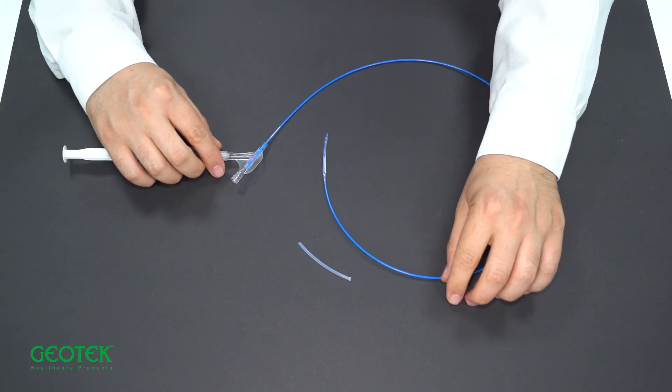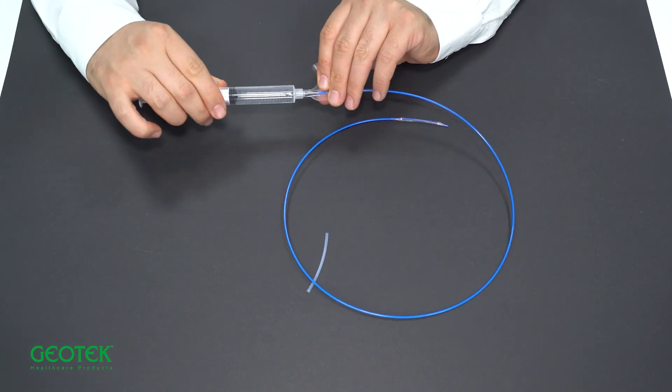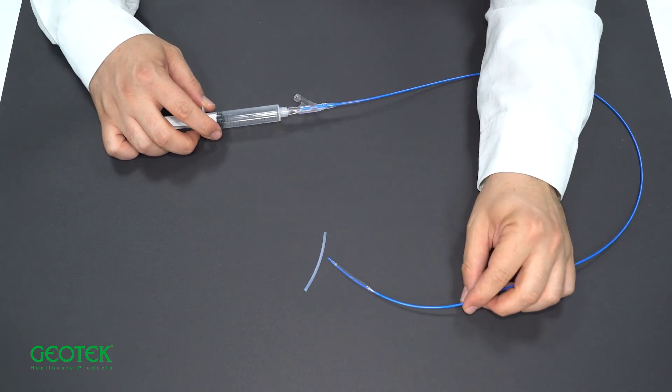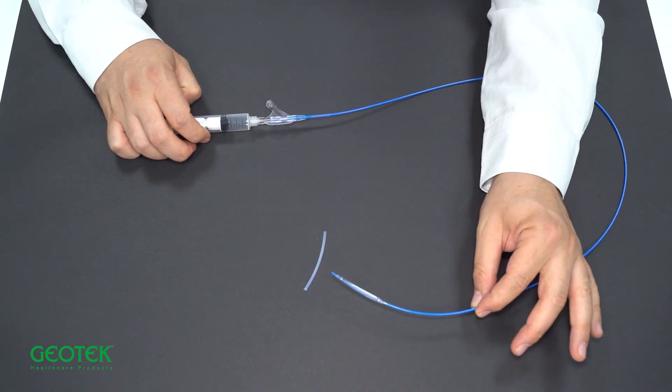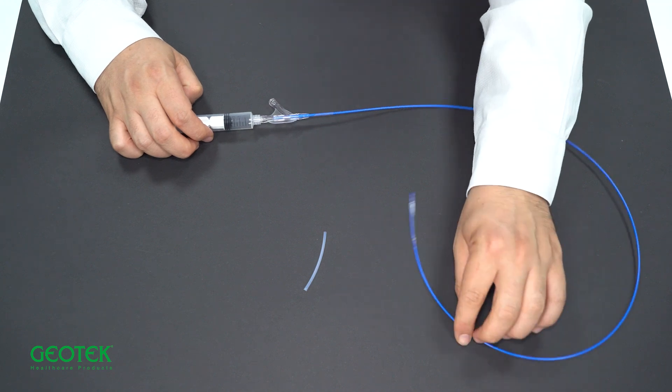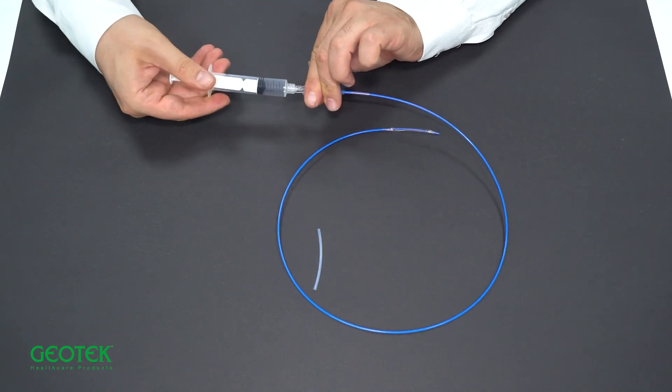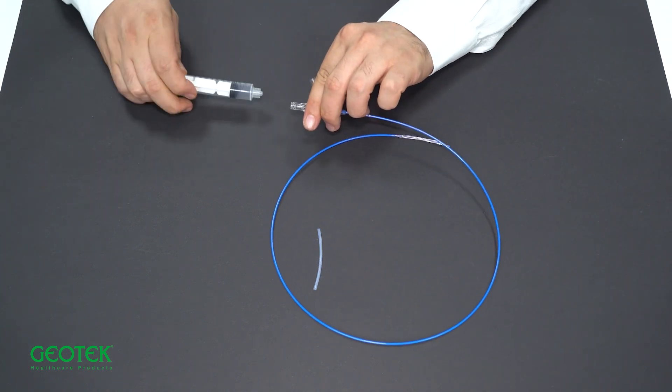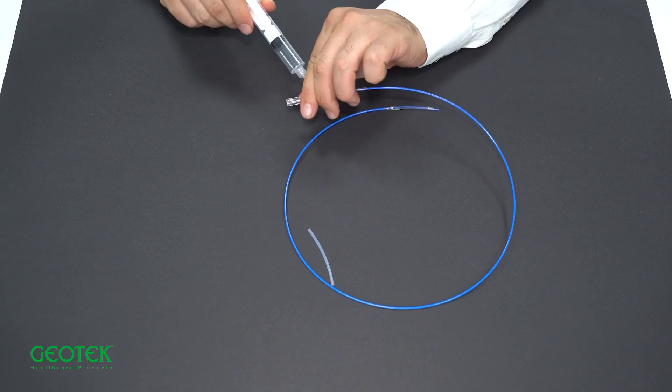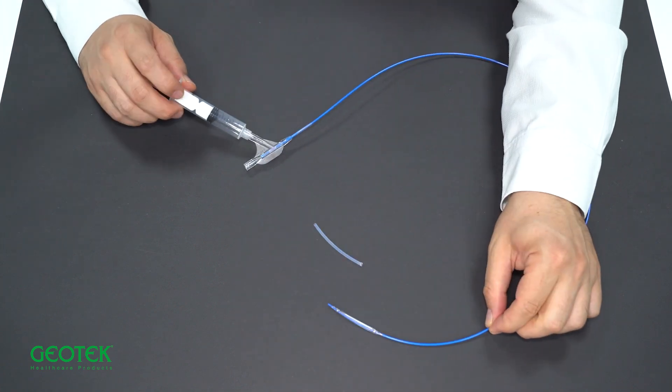Following the placement of the catheter, the location of the catheter is first confirmed by giving opaque material through the working channel. After the balloon is advanced and placed at the stenosis point, the balloon is inflated with sterile saline or a suitable fluid to expand the stenosis.